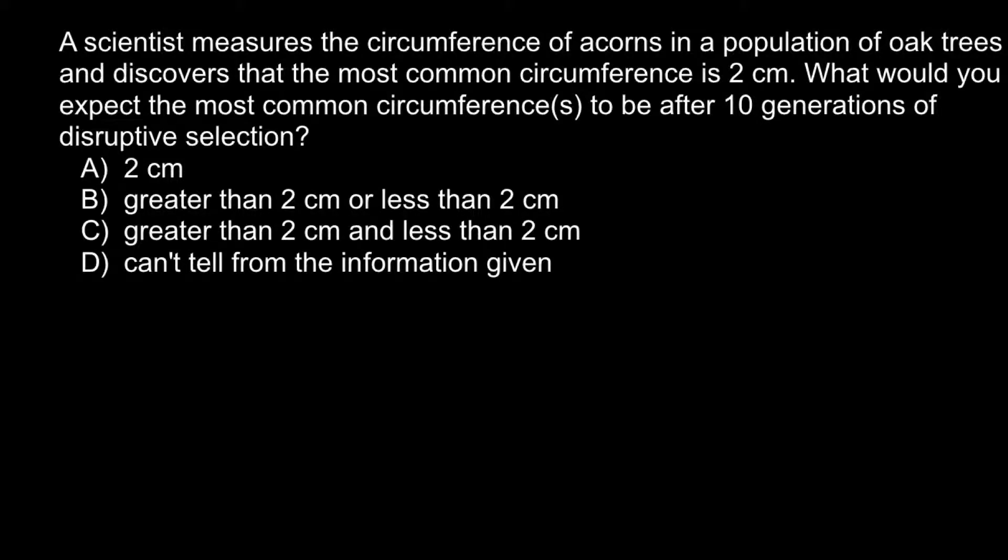Hi, today's video is going to be about population genetics. Here is a problem: a scientist measures the circumference of acorns in a population of oak trees and discovers that the most common circumference is 2 centimeters.